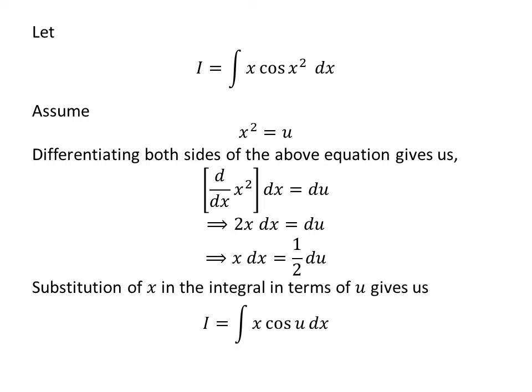Substitution of square of x by our assumed value in the integral I gives us I is equal to integral of x times cosine of u.